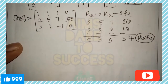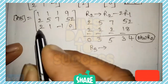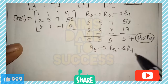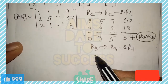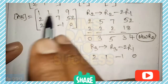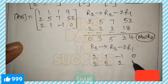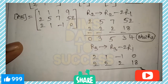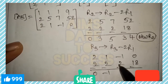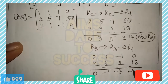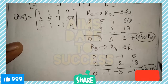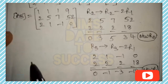For R3, apply R3 → R3 - 2R1, because the first element is also 2. R3 is [2, 1, -1, 0], and 2 times R1 is [2, 2, 2, 18]. Subtracting: 2-2=0, 1-2=-1, -1-2=-3, 0-18=-18. The new R3 is [0, -1, -3, -18].